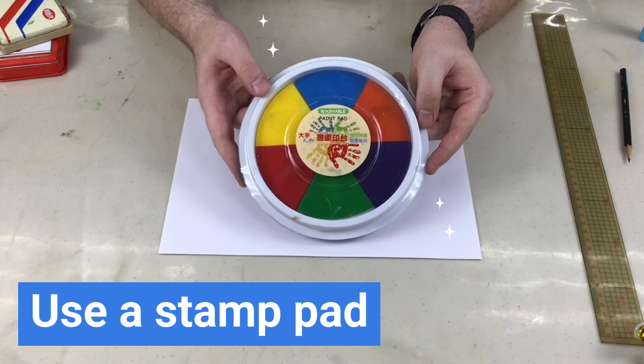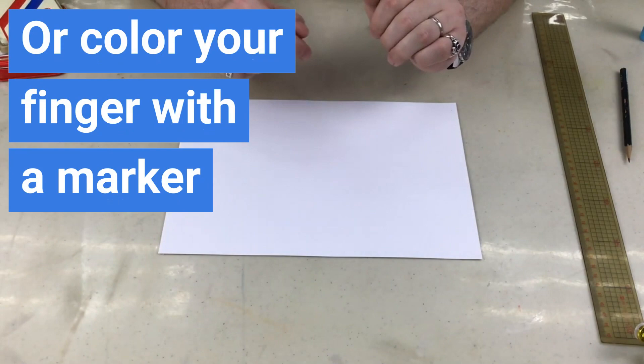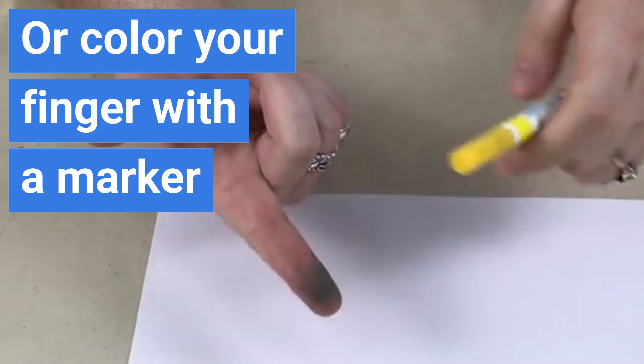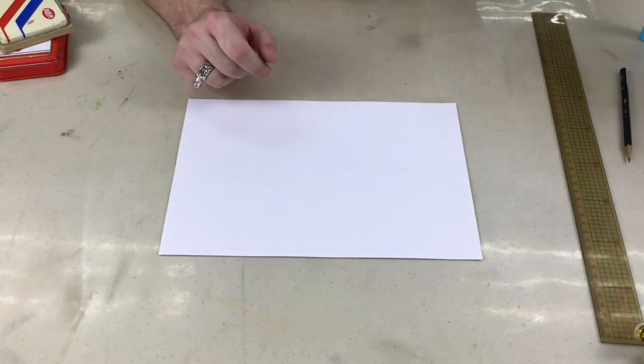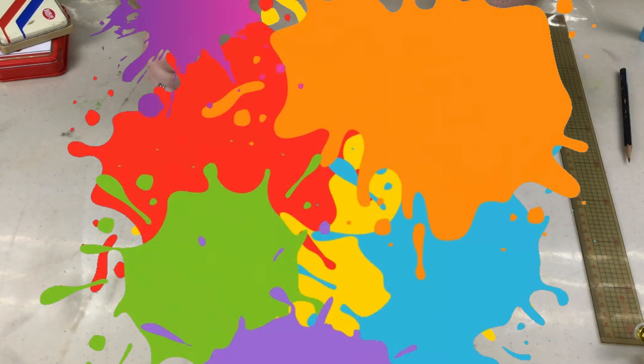If you don't have stamp pads in your house, that's okay, because you can use a marker and just color your finger with a marker. You can see I already colored my finger. Try different things. You could use some chalk. Maybe chalk could work to make some fingerprints.